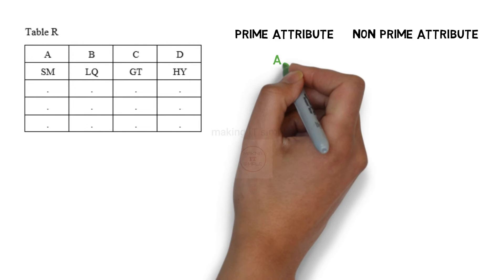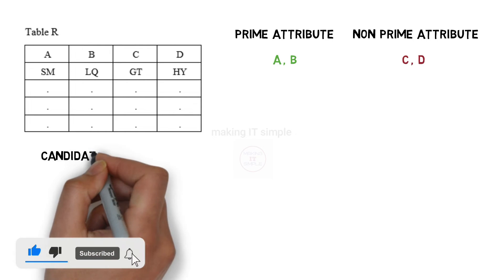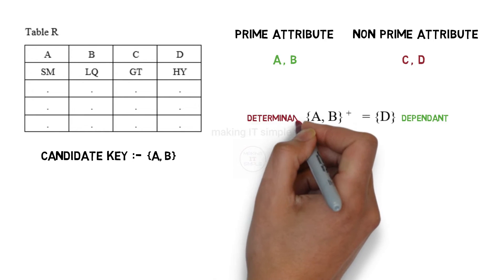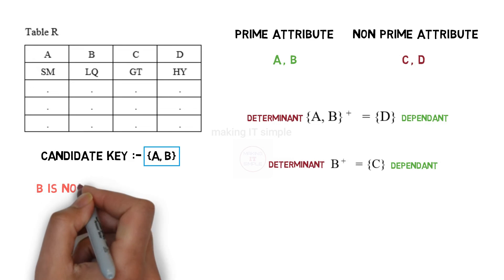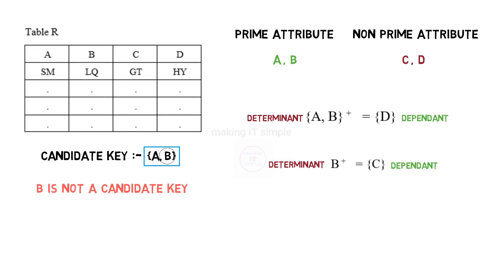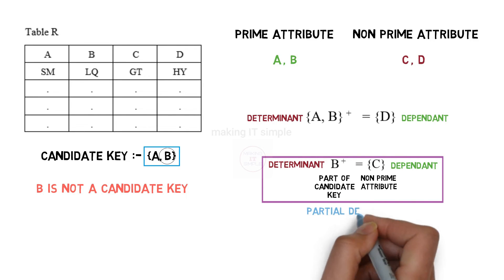Now we understand what prime and non-prime attributes are. Let's focus back on the functional dependencies. The first one: dependent D is determined by determinant A and B — D is determined using the candidate key, so there is no problem with this functional dependency. The second one: dependent C is determined by determinant B. Now B is not a candidate key, but it is part of a candidate key. When a non-prime attribute — in this case C — can be determined using part of a candidate key, this type of functional dependency is called partial dependency.